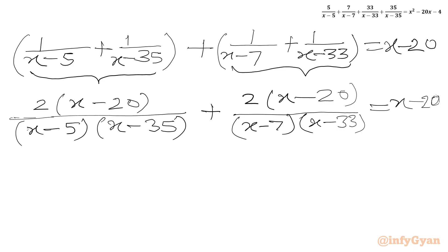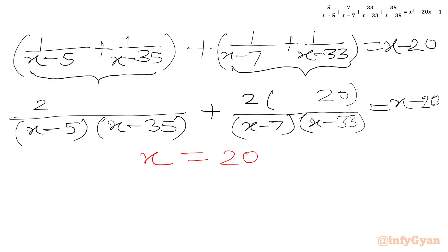Now if I plug in x equal to 20, LHS gives 0 plus 0 and RHS is 0, so x equal to 20 is our second solution. We can immediately cancel (x minus 20) from both LHS and RHS and write 1 in its place on both sides, giving 2 times 1 over the first denominator plus 2 times 1 over the second denominator equals 1.